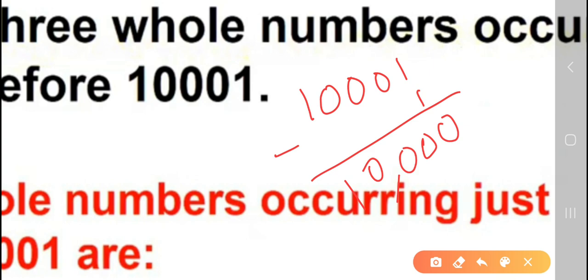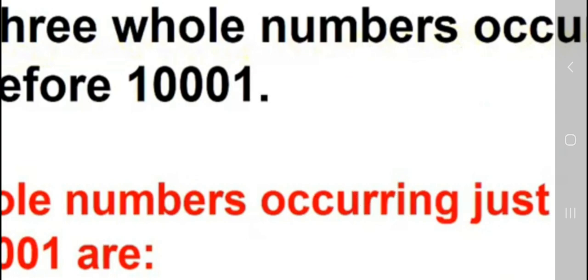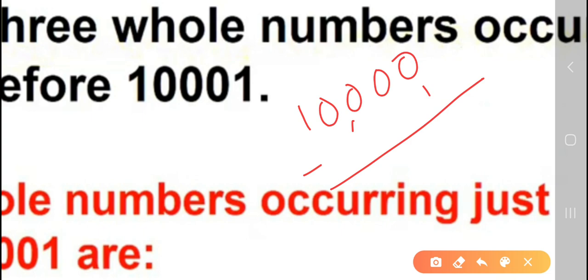Now, 10,000 minus 1 you should do for the next number. For the next number, 10,000 you will write it first. Then minus 1. Now, it is 0. So, you will borrow one number and it will become 10 here. 10 minus 1, 9. This is 9 here. 9 and 9. 9,999.